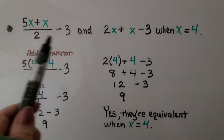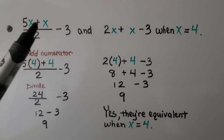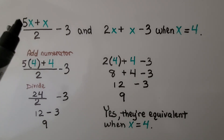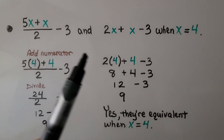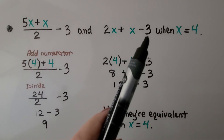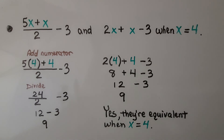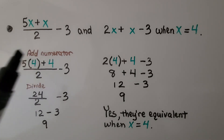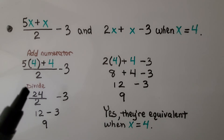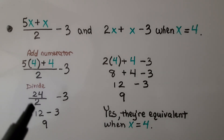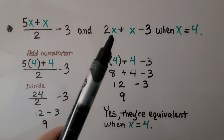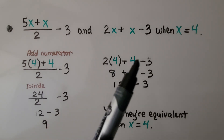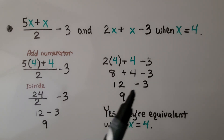Here we have an expression with a fraction bar, which means division. We have (5x plus x) divided by 2, minus 3, compared to 2x plus x minus 3, when x equals 4. We substitute 4 for x in the numerator: 5 times 4 plus 4 is 20 plus 4, which is 24, over 2. So 24 divided by 2 is 12, minus 3 gives us 9. For the second expression, 2 times 4 is 8, plus 4 is 12, minus 3 is 9. So yes, they're equivalent when x equals 4.